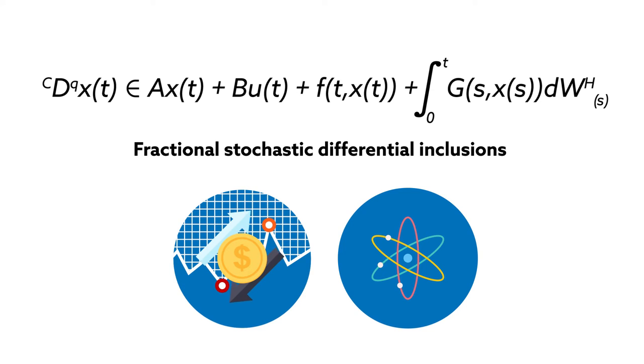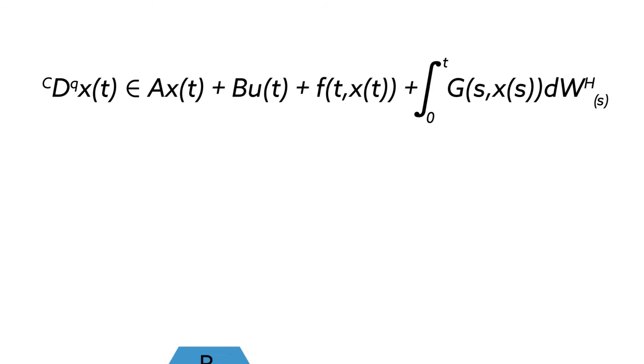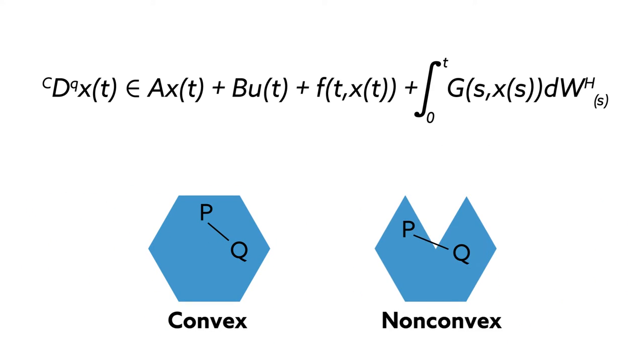They proved the existence of solutions for two forms of these equations, convex and non-convex. In math, convex cases are typically easier to solve when looking for the best way to control a system. Non-convex cases are trickier to solve. The ability to prove controllability in both cases is therefore a major advantage of this method.